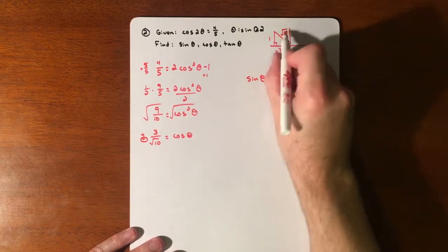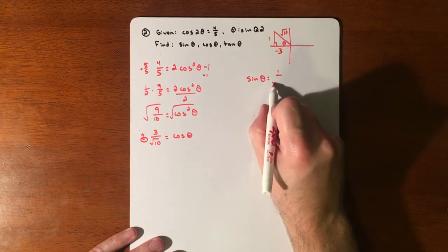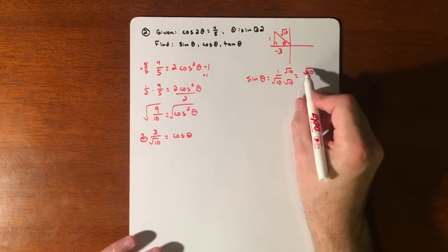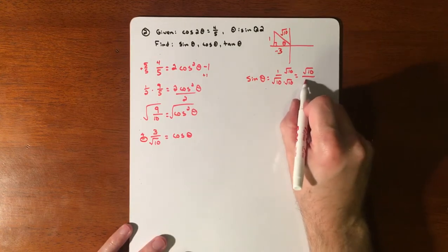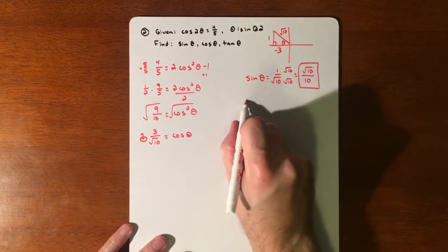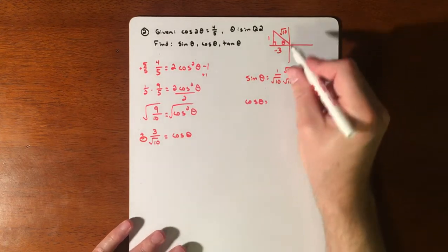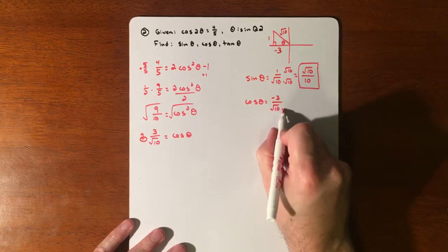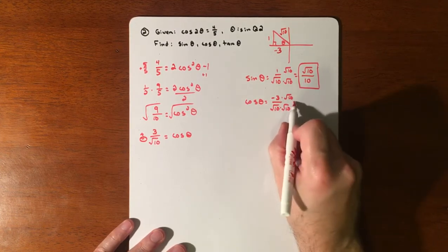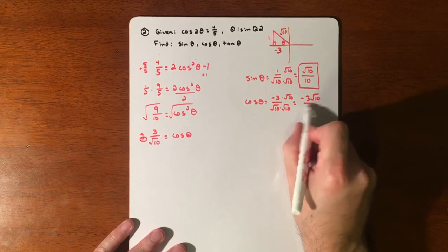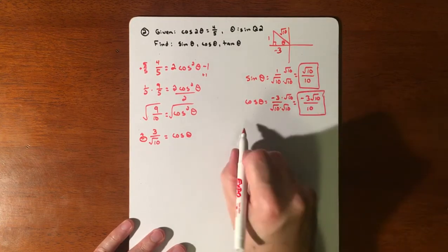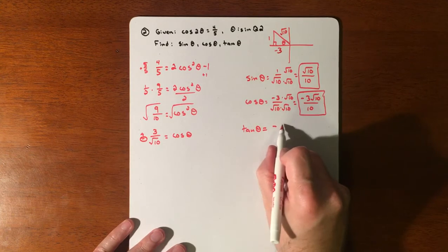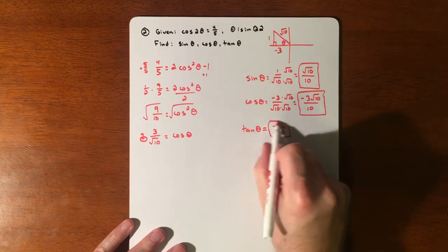So sine of θ is going to be 1/√10, which we'll have to rationalize. We multiply by √10 over √10, so that's √10/10. Cosine we already had, that's -3/√10, we'll rationalize that to get -3√10/10. And then tangent of θ is going to be opposite over adjacent, so that's -1/3.